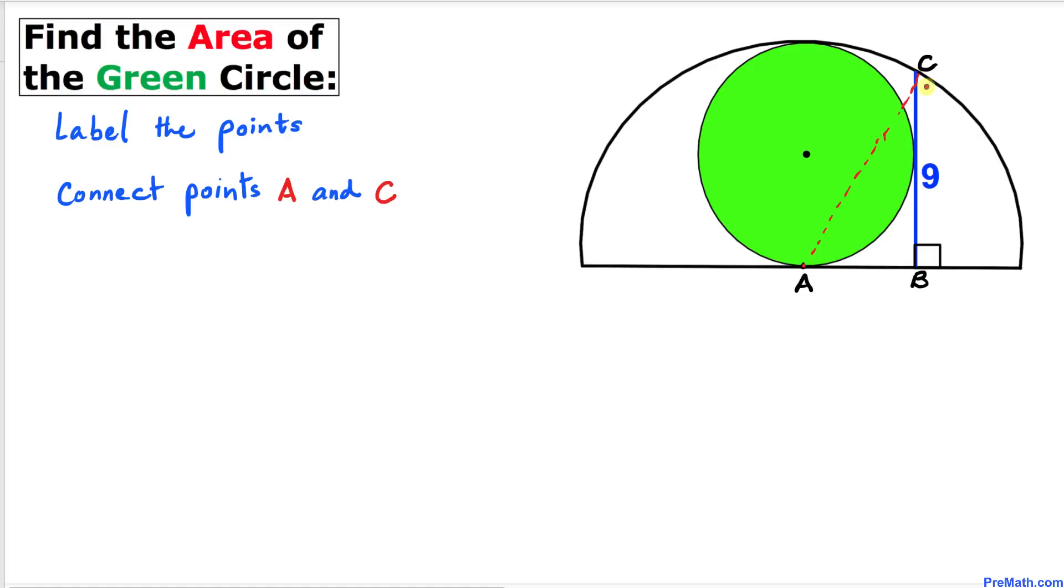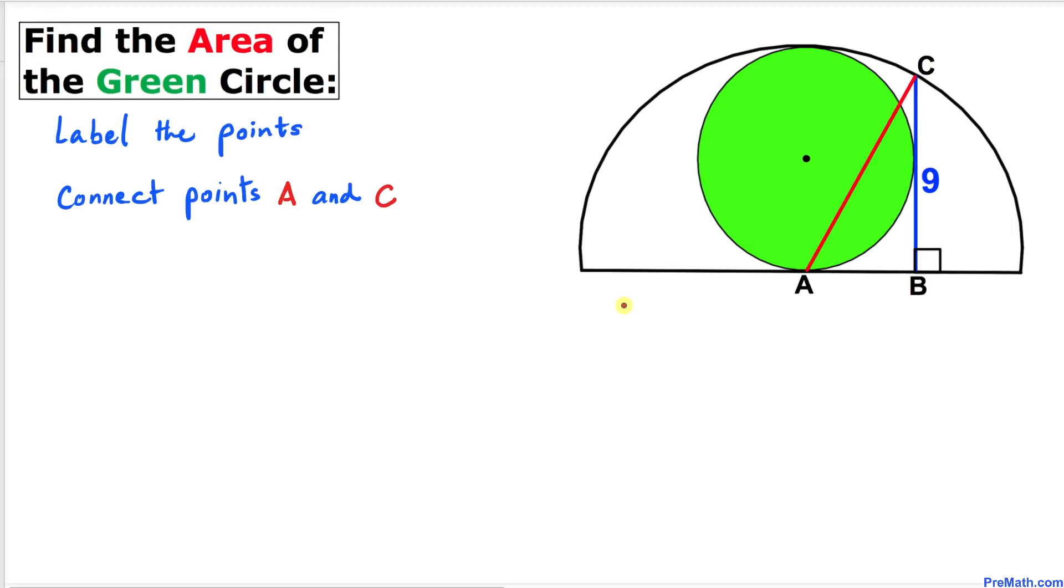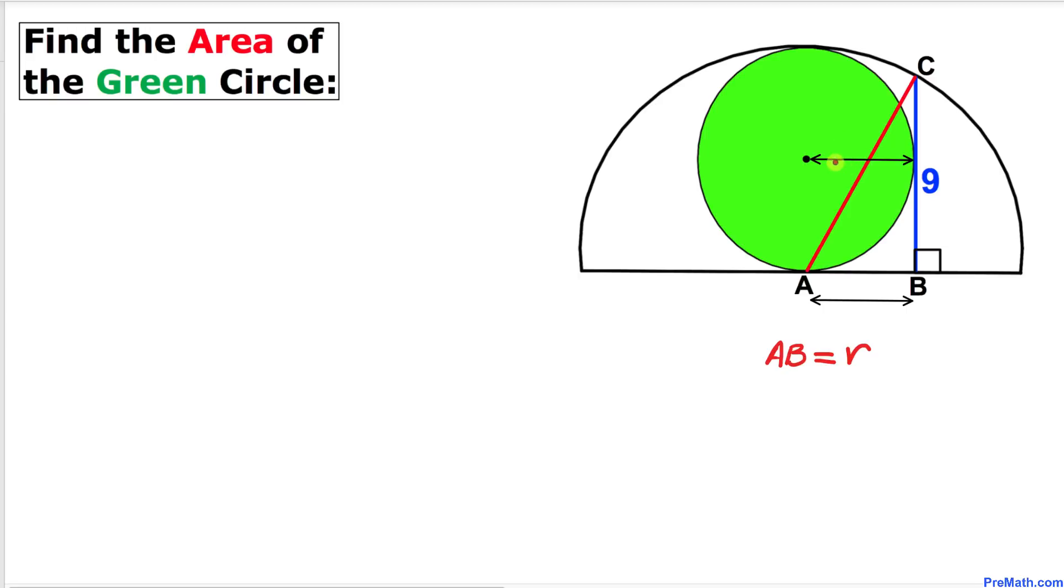In this next step, we can see that this is the radius of this green circle. Let me call it lowercase r. Then this distance AB is also going to be the same distance, so I'm going to call this one r as well.